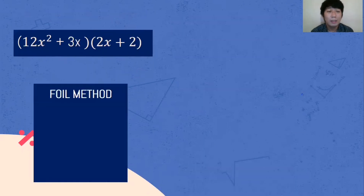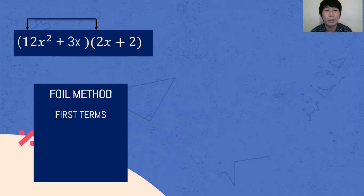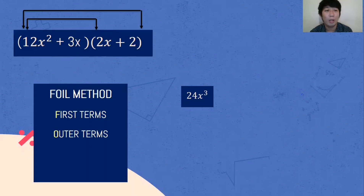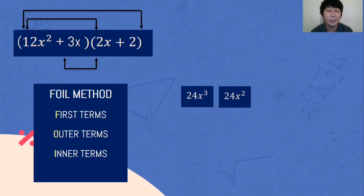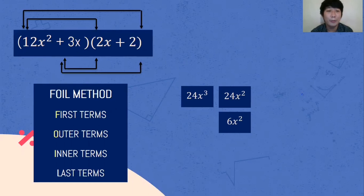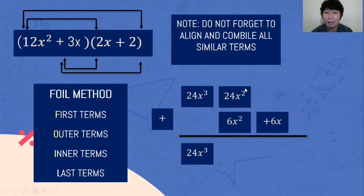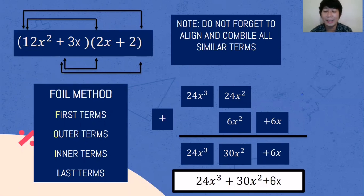Another example. Let's use the FOIL method again. Multiply the first terms: 12x squared multiplied by 2x — 12 multiplied by 2 is 24, and x squared multiplied by x is x cubed, so 24x cubed. Outer terms: 12x squared multiplied by 2 — 2 multiplied by 12 is 24, giving 24x squared. Inner terms: 3x multiplied by 2x — 3 multiplied by 2 is 6, and x multiplied by x is x squared, giving 6x squared. Last terms: 3x multiplied by 2, that is 6x. Do not forget to align and combine all similar terms. Bring down 24x cubed. Then 24x squared plus 6x squared — same signs, so we add them: 30x squared. Then bring down 6x. The final answer is 24x cubed plus 30x squared plus 6x.